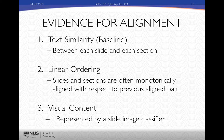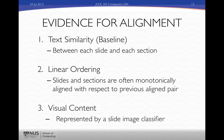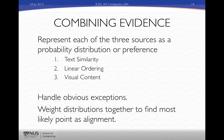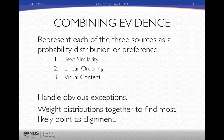We have some evidence that we use for the alignment. Text similarity does a good job but fails for specific types of slides with very little text. We can also use linear ordering, which we just reviewed in our monotonic alignment. Finally, we think visual content can be very helpful because it can be used to align things that don't have textual evidence. The way we do it is a heuristic system: we represent each of these three sources of information as some type of probability distribution or preference, handle obvious exceptions using heuristic methods, and weight the final distributions together to find the most likely alignment.